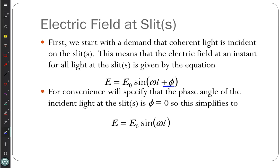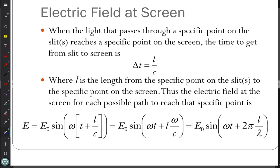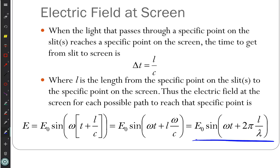This is the electric field coming to our slits. Because we have different paths, we're going to have different times for the light to travel from the slit to the screen. The time difference delta t is the time it takes to go from the slit to a given point on the screen. If I put that into E equals E-naught sine of omega t, replacing t with t plus the change in time, the electric field at the screen has a time-dependent part and a length-dependent part. It takes longer to get there for a larger distance, meaning you'll be at a different phase in the wave.